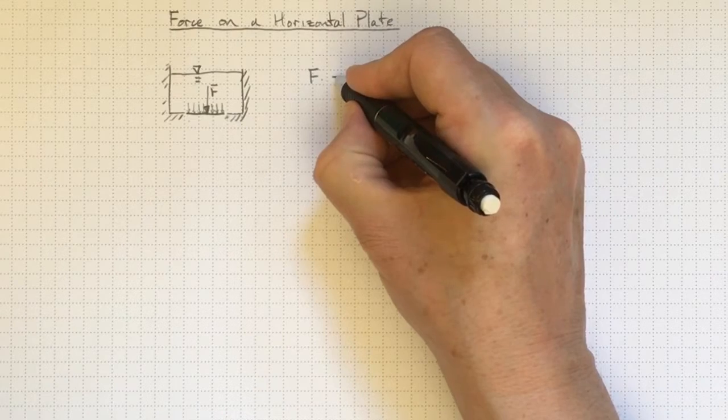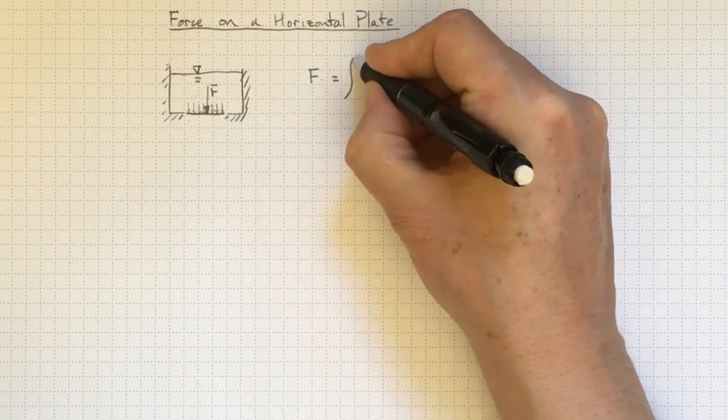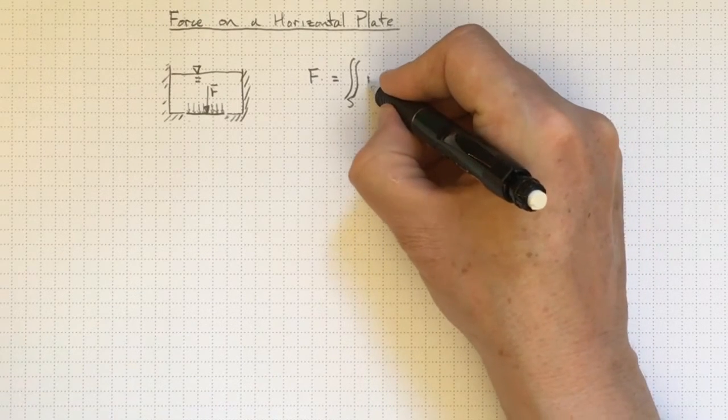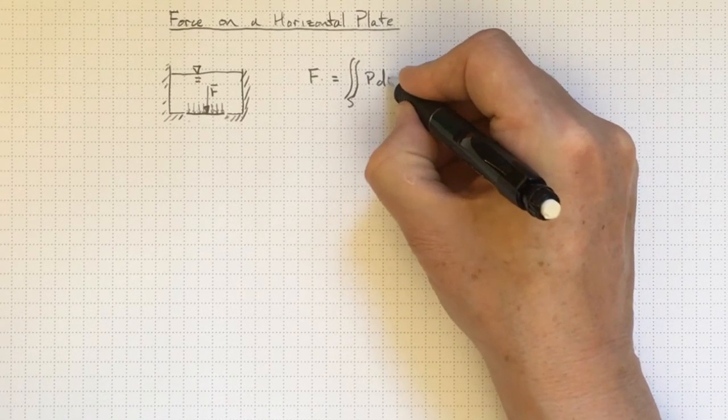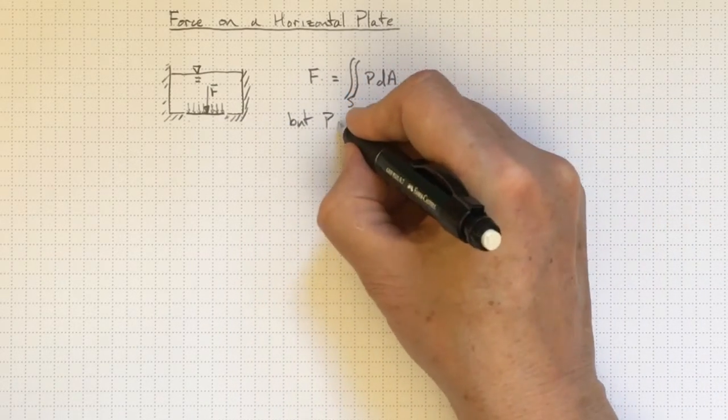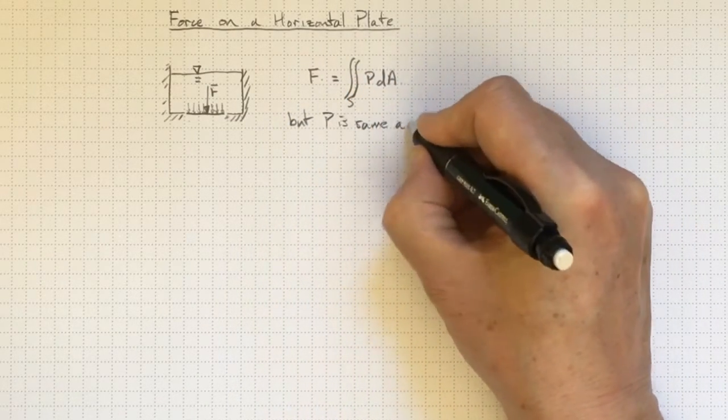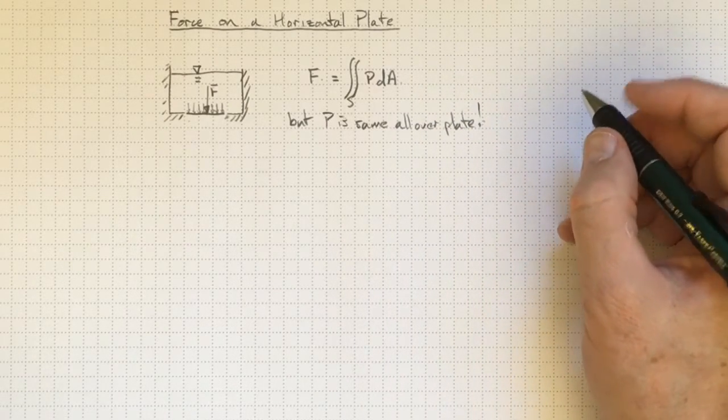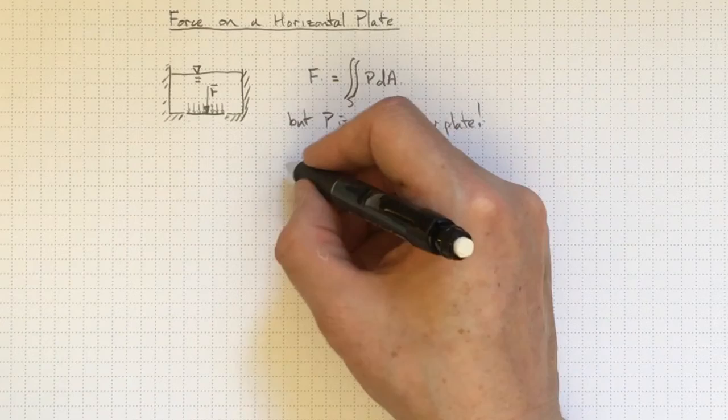And so we'll get the total force by integrating over the surface of that plate, it's a double integral over the surface, of the pressure times the incremental area. But, pressure is the same all over the plate. So if the pressure is the same, we can take p outside the integral.